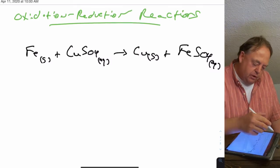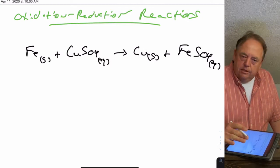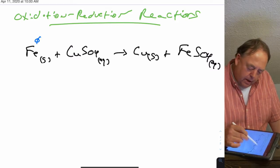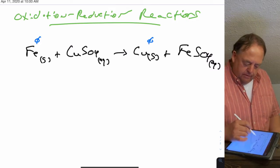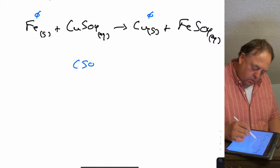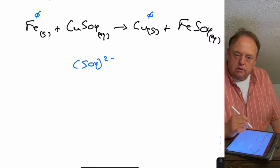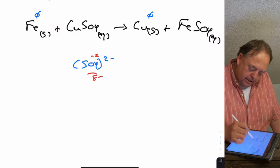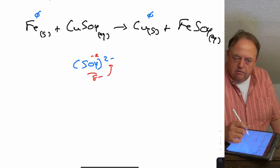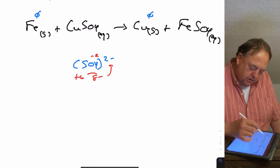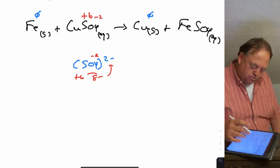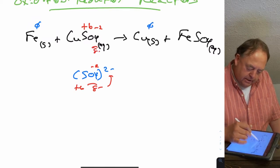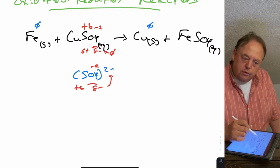In order to understand this reaction, the first thing you have to do is assign oxidation numbers to all of the elements. Iron in its pure elemental state is zero. Pure copper solid is also zero. For CuSO4, SO4 is a polyatomic ion with a charge of negative two. Oxygen is negative two — that's eight negatives total — so sulfur must be plus six. Since sulfur is plus six and oxygen is negative two, copper has to balance everything to zero, so copper must be plus two.